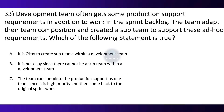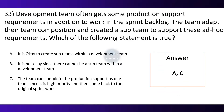Question 33. The development team often gets some production support requirements in addition to work in the sprint backlog. The team adapted their team composition and created a sub-team to support these ad hoc requirements. Which of the following statements is true? Option A: It is okay to create sub-teams within a development team. Option B: It is not okay since there cannot be a sub-team within a development team. Option C: The team can complete the production support as one team since it is high priority and then come back to the original sprint work. The correct option is A and C.